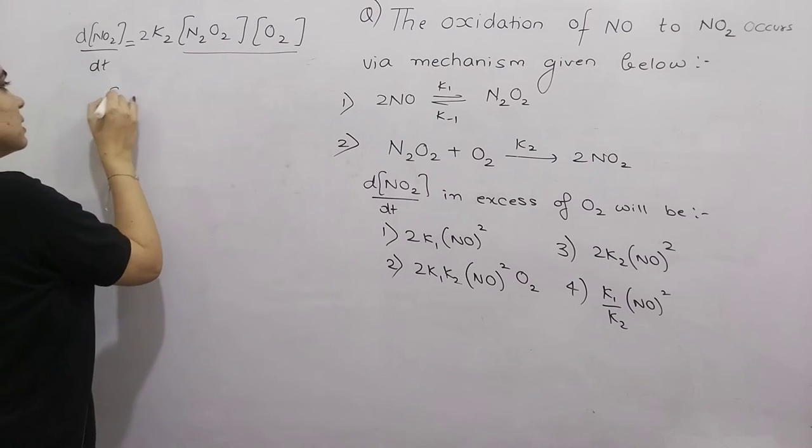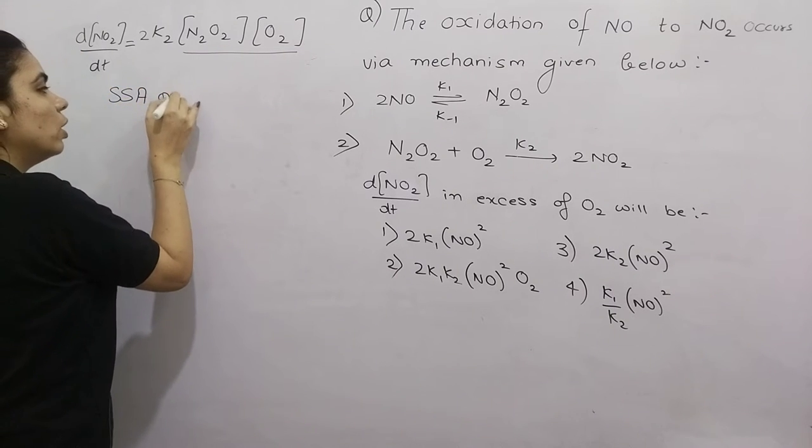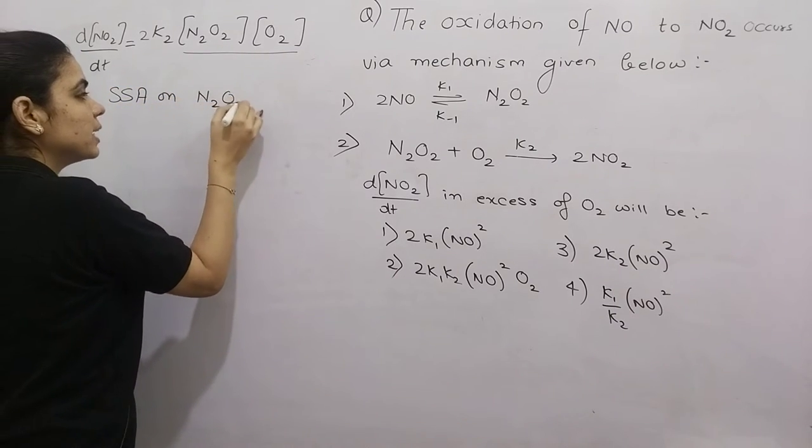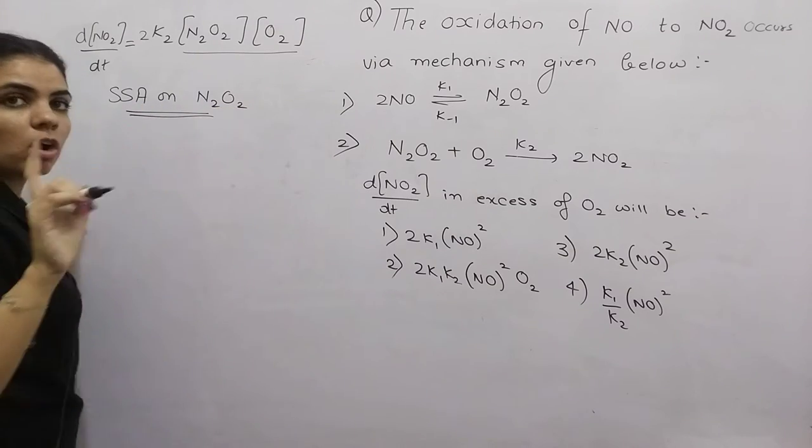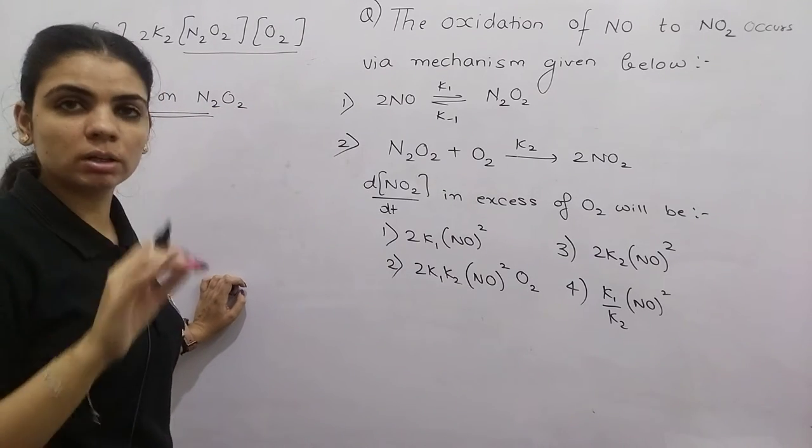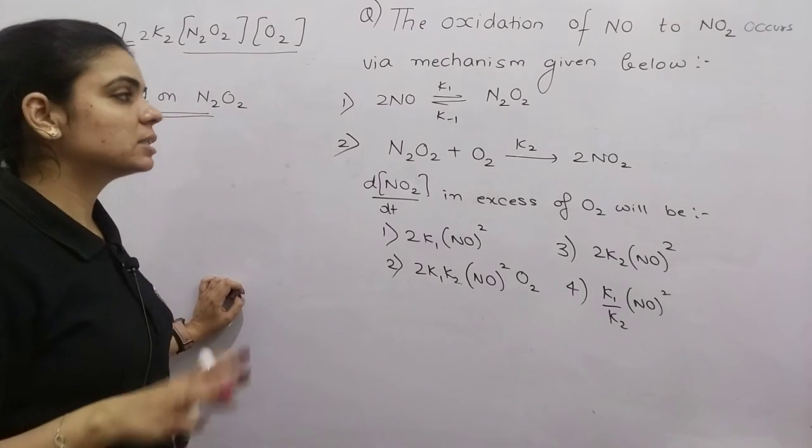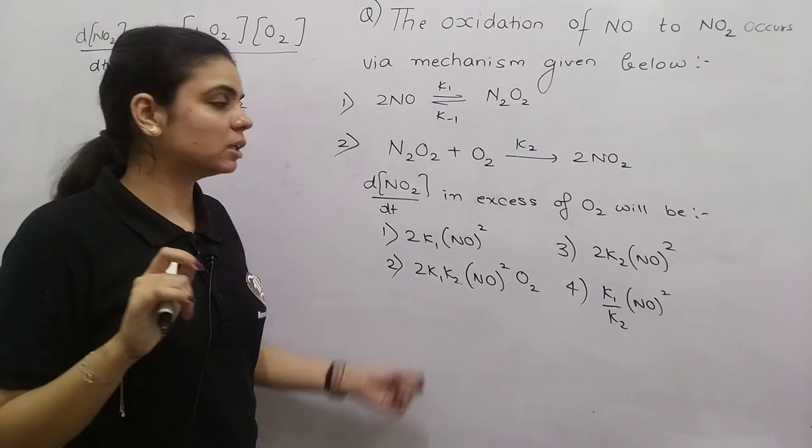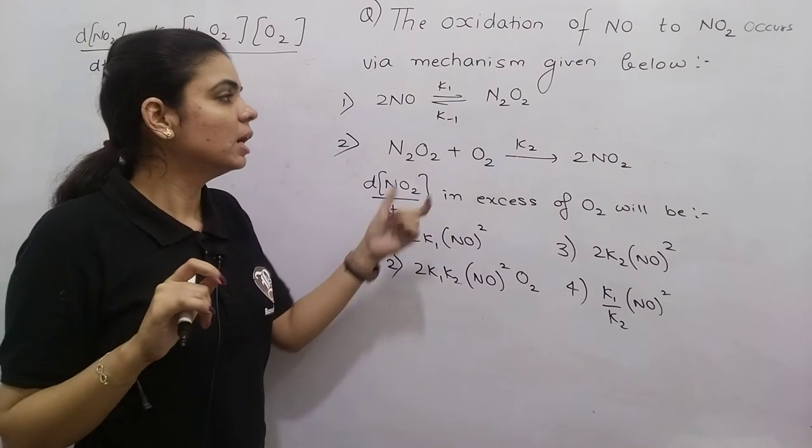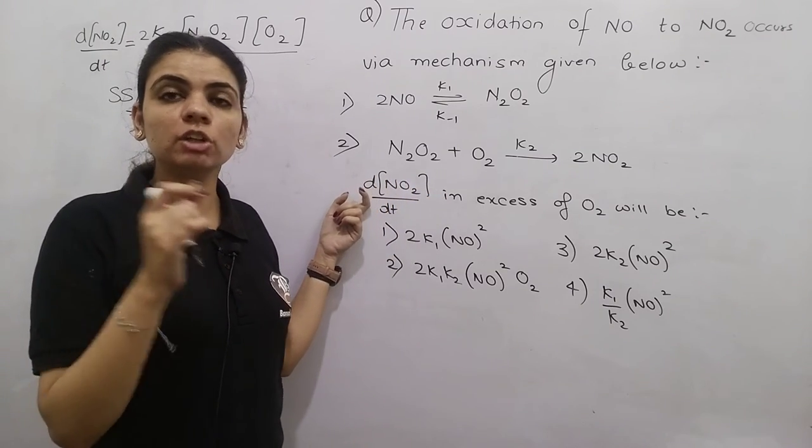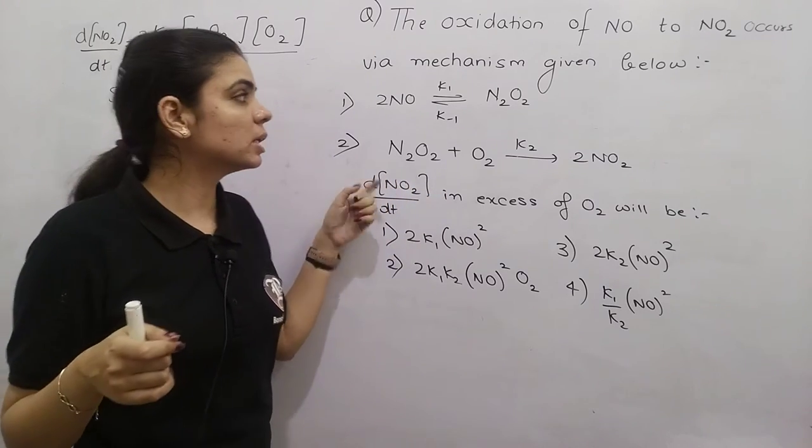So my job is to eliminate N2O2 from this. For that we will apply steady state approximation on N2O2. I've explained this in detail in my lecture series. Briefly, it means the rate of change of concentration of intermediate is zero.